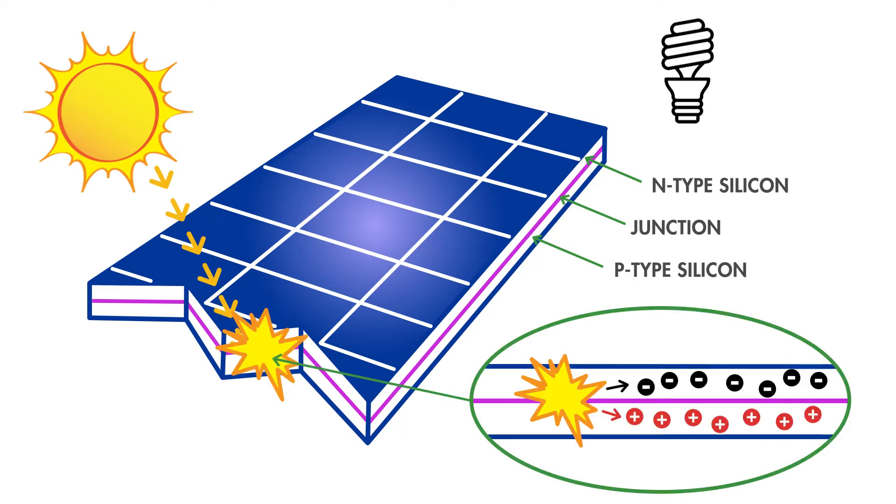When sunlight hits the cell, the photons in light excite some of the electrons in the semiconductors to become electron-hole pairs. Since there is an internal electric field, these pairs are induced to separate. As a result, the electrons move to the negative electrode, while the holes move to the positive electrode. If there is an external load connected across the positive and negative electrodes, then the circuit is closed and electric current is generated to supply the external load. This is how the photovoltaic effect works in a solar cell.